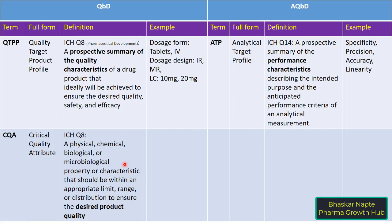Quality attributes of products — which can be physical, chemical, biological, or microbiological — define whether the product is of desired quality. Examples of CQA include identification, assay, related substances, content uniformity, and dissolution in the case of a drug product. While all quality attributes form your product specification, not all are critical; CQA is a subset of all quality attributes.